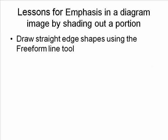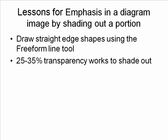First, to draw the shaded-out portion, there's a great tool called the freeform line tool. For any shape you want to draw that has straight edges - and many times that's exactly what we want - use the freeform line tool. You simply click, move your mouse, click again, and it draws a straight line between those two spots. That's how I drew the shape used in today's makeover. How transparent should you make the color? In this case I'm using black, and usually about 25 to 35 percent transparency works in most cases.